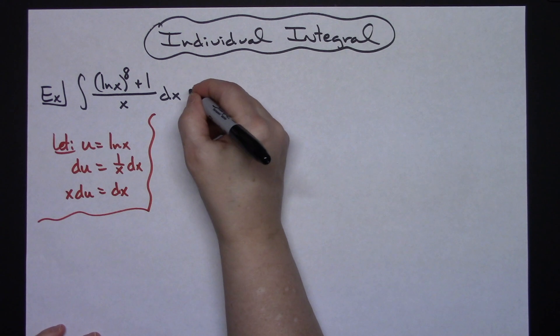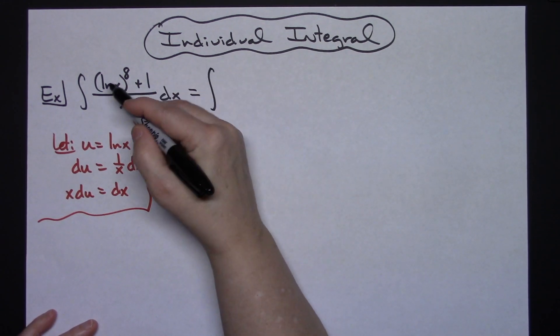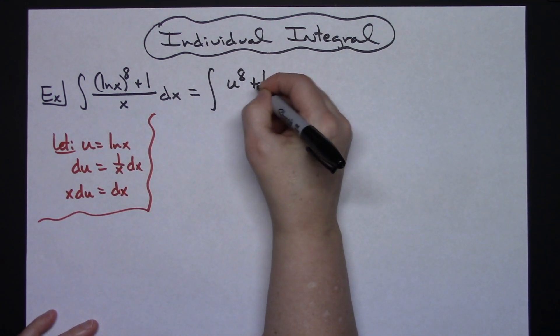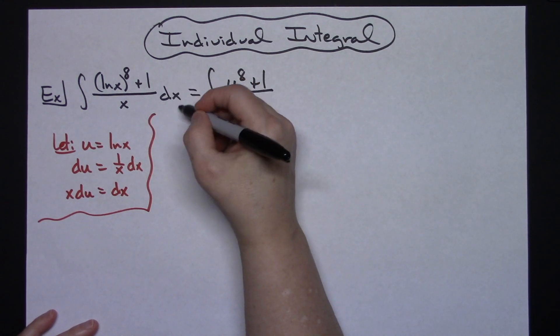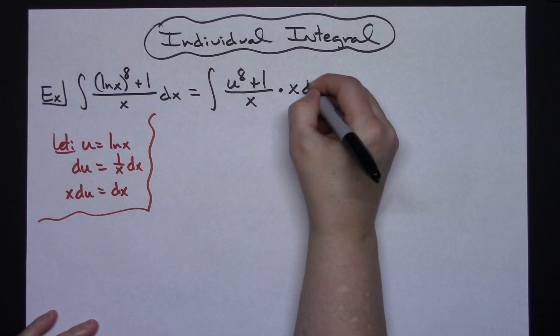Then I'm going to come up here to my original integral and I'm going to start doing some substitutions. For that natural log of x right there I'm going to put in my u. So I will have u to the eighth plus 1, and then my x there will be on the bottom. I'm going to take that dx and substitute it for what it is equal to, so times x du.